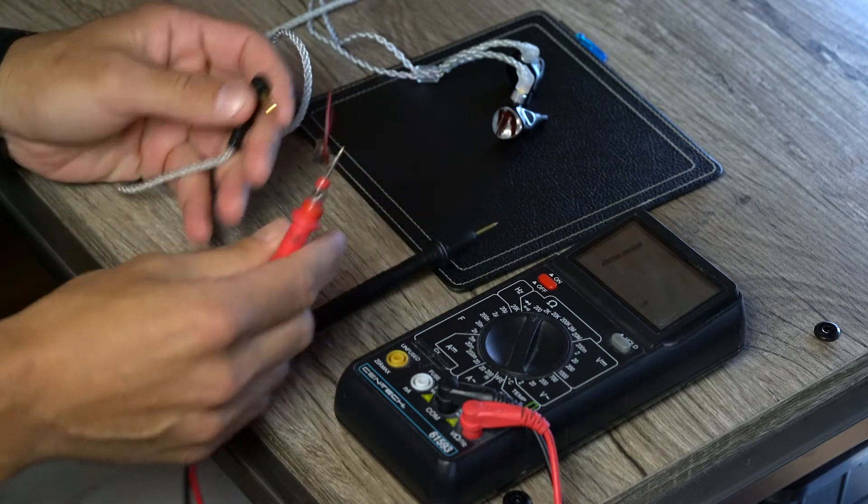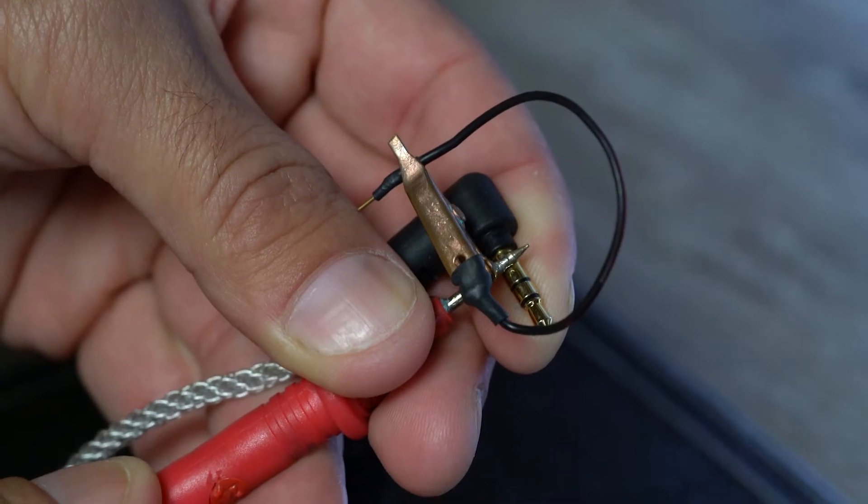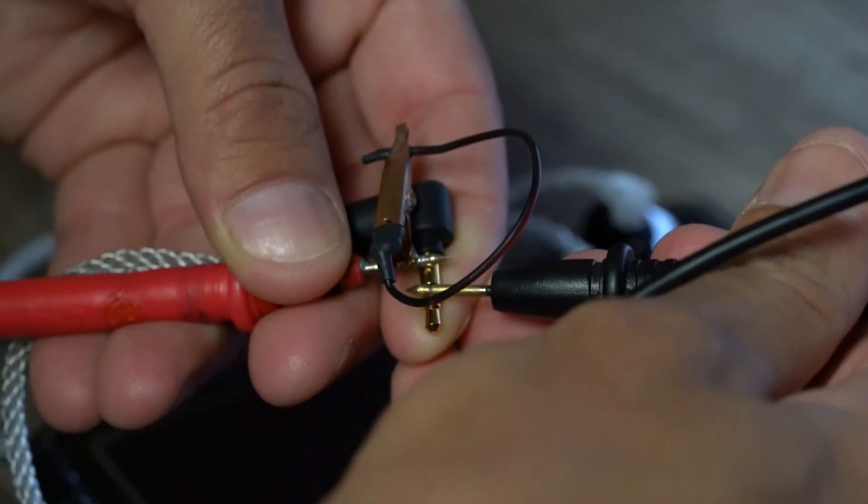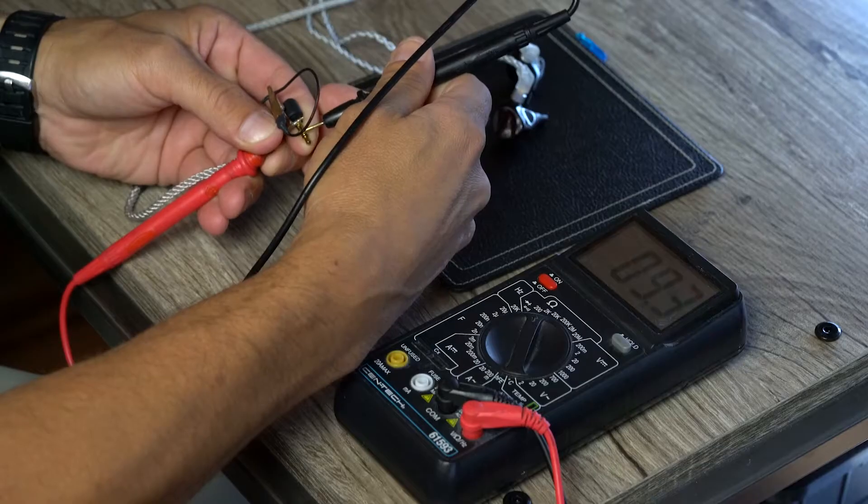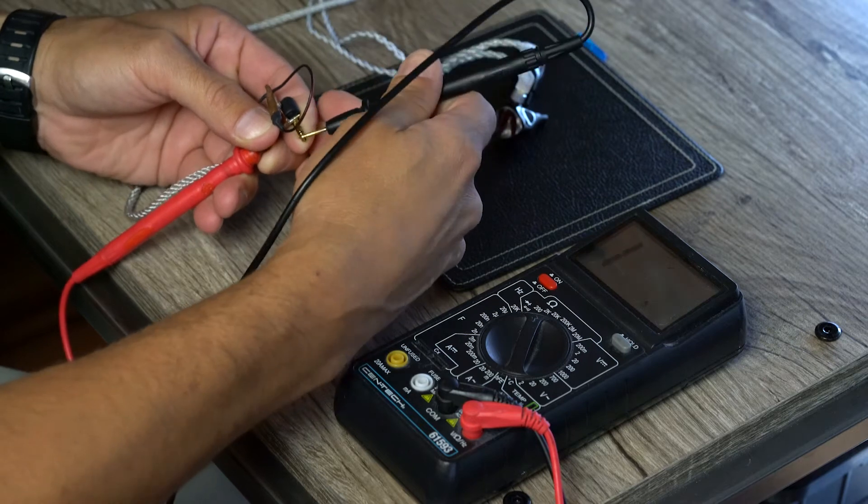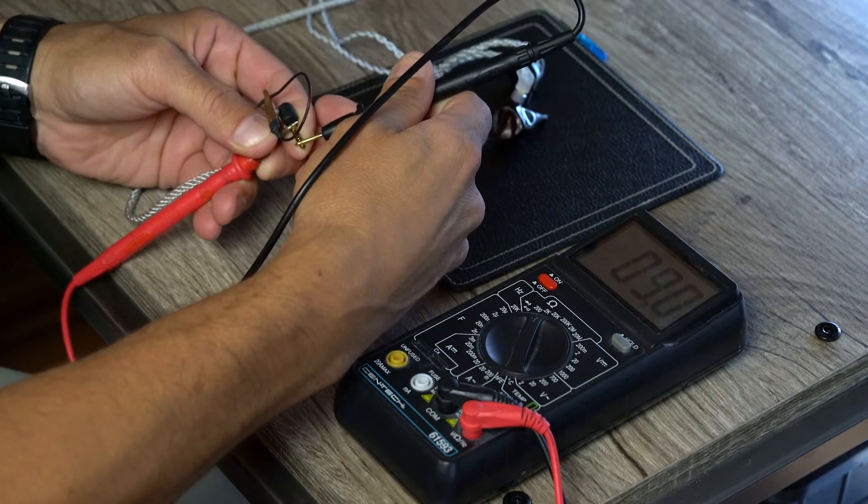You want to take first probe and address the sleeve portion. Take the second probe and you want to hit the ring. And as you can see I'm getting an impedance just above 9 ohms. That's my right ear, that's the ring side of the TRS. Onto the left to the tip, 9.2 ohms.